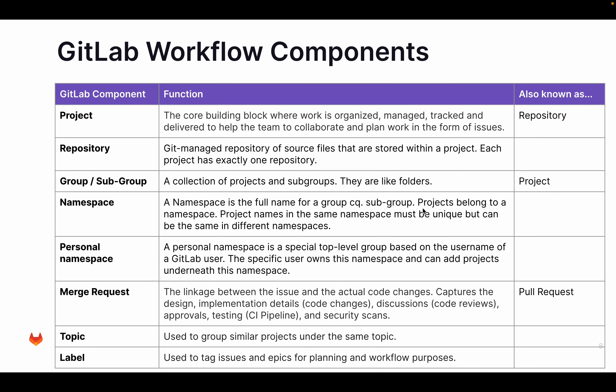To summarize: in GitLab, a project is a core building block where you do and plan all your work. Within a project you have a repository — each project has exactly one repository, and a repository is where all your source files are, with Git as the backend. So GitLab is a Git-managed UI. Projects and therefore repositories are grouped in groups and subgroups, so they are like folders.